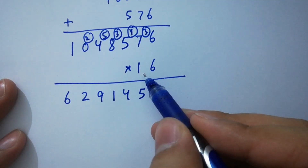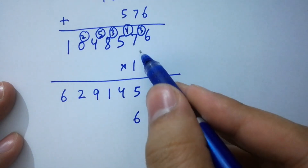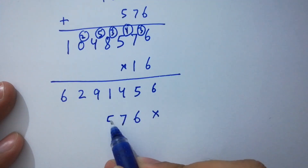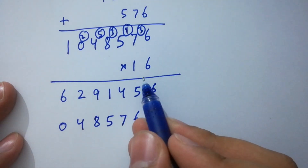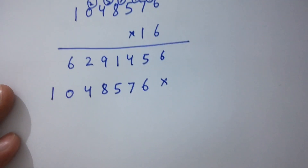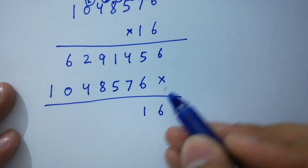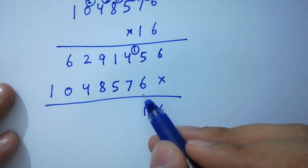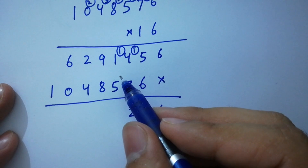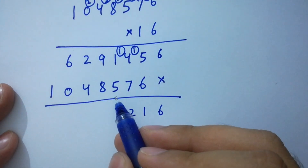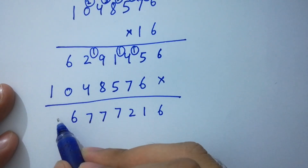Next step, multiply by 1 (the tens digit of 16). 1 times 6 is 6. 1 times 7 is 7. 1 times 5 is 5. 1 times 8 is 8. 1 times 4 is 4. 1 times 0 is 0. 1 times 1 is 1. Now add them: 6; 6 plus 5 is 11, write 1 carry 1; 7 plus 4 plus 1 is 12, write 2 carry 1; 5 plus 1 plus 1 is 7; 9 plus 8 is 17, write 7 carry 1; 4 plus 2 plus 1 is 7; 6 plus 0 is 6; and 1 as it is. Result: 16,777,216.